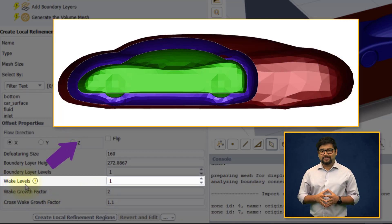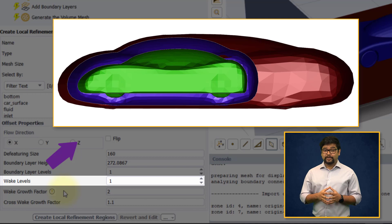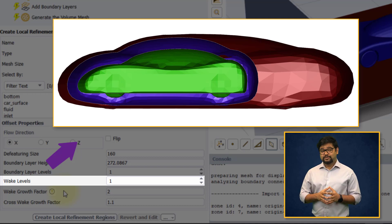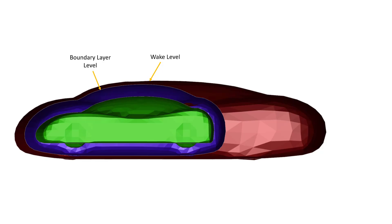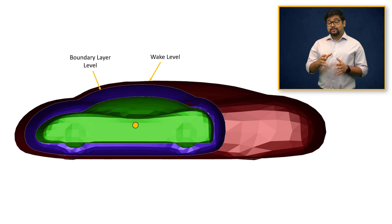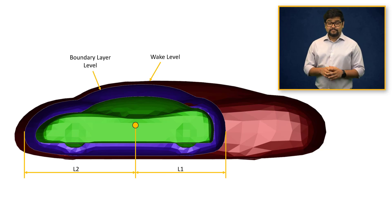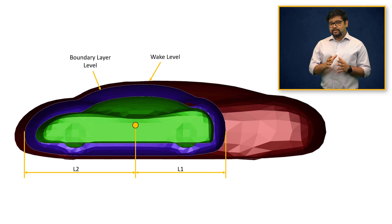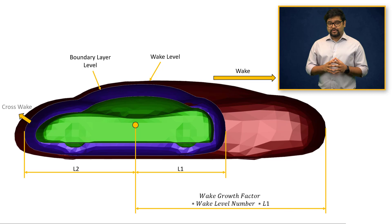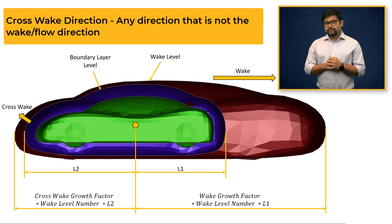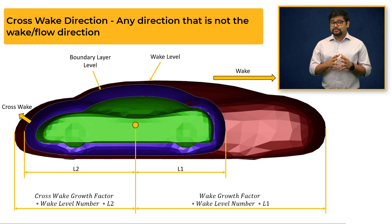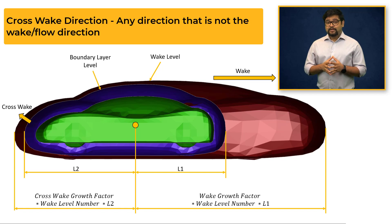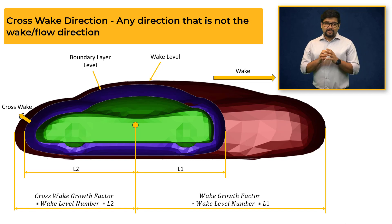Wake levels are like the boundary layer levels, except that they are not equally scaled in all directions. These are primarily used to create BOIs with extended domain in the downstream or wake region of the selected geometry. The length of the body from its center to the outermost boundary layer level is calculated in both upstream and downstream directions. Subsequently, the offset distance for each wake level is calculated using these length values, the wake growth factor and cross-wake growth factor, which control the offset in downstream and cross-wake directions respectively, using the formulae shown.